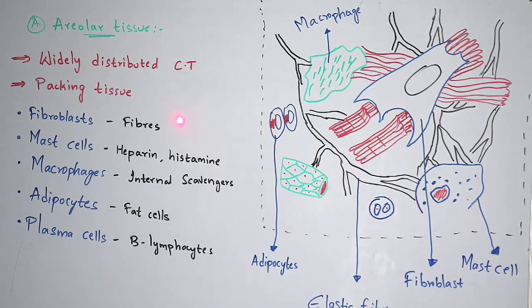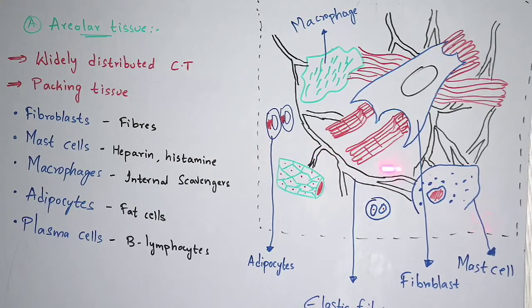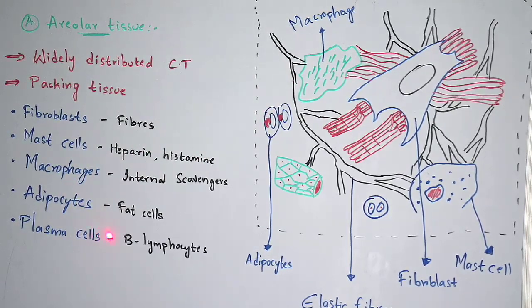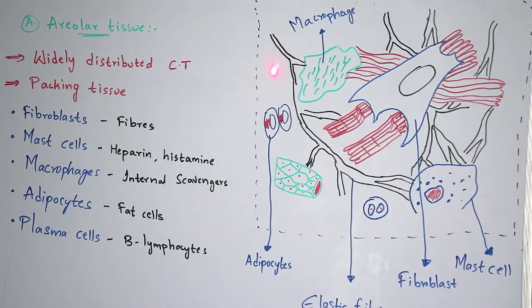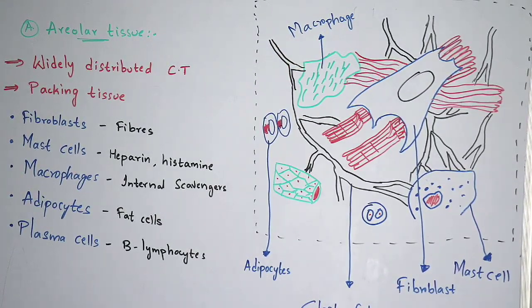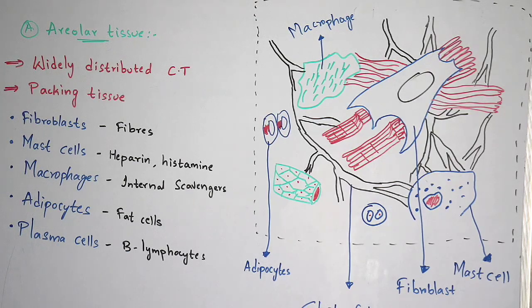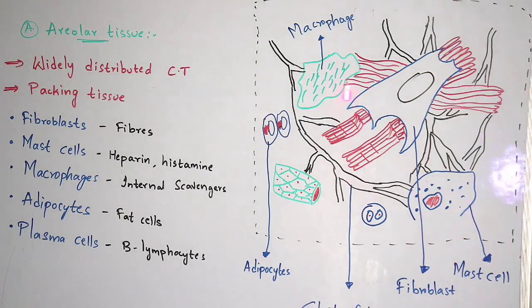All elements are covered in this diagram: fibroblast, mast cells, macrophages, and adipocytes. Plasma cells cannot be seen without a microscope at 4000x zoom because they are very minute. They can be seen in the immune system. All of these — fibroblast, mast cells, macrophages, and adipocytes — are arranged loosely, so this comes under the classification of loose connective tissue.